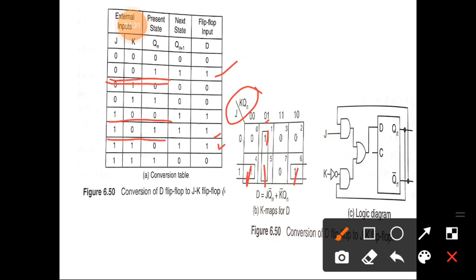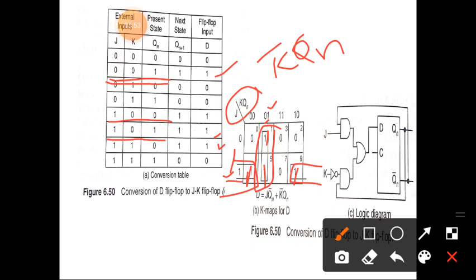We group these two ones together. Here J changes from 0 to 1, giving K̄·Q_N. Then we group the other pair of ones. Here K changes from 0 to 1 and Q_N is 0, giving J·Q̄_N. So the final equation is D = J·Q̄_N + K̄·Q_N.